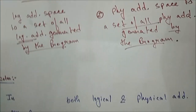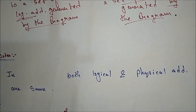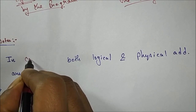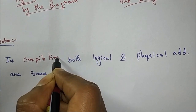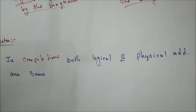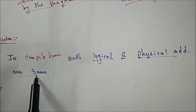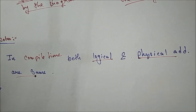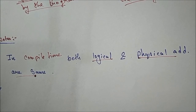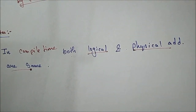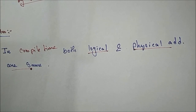Now the key points: the first point is that in compile time and load time, both logical and physical addresses are the same. So if anyone asks in which case logical and physical addresses are the same, your answer is: at compile time and load time, both logical and physical addresses are the same.